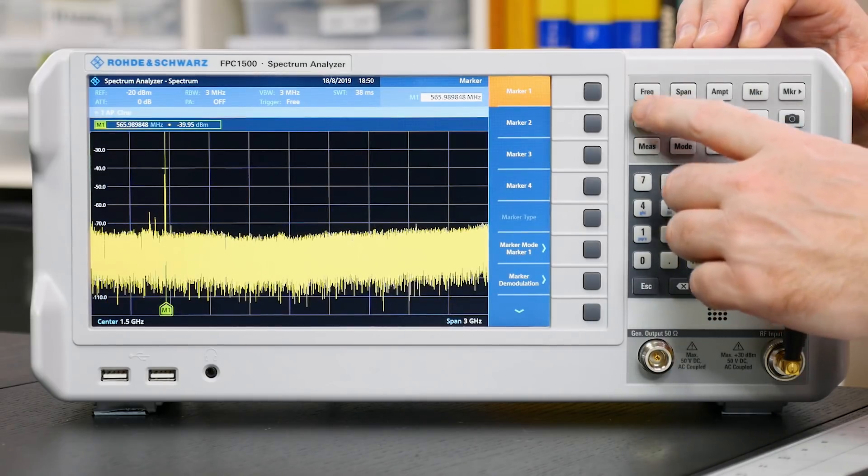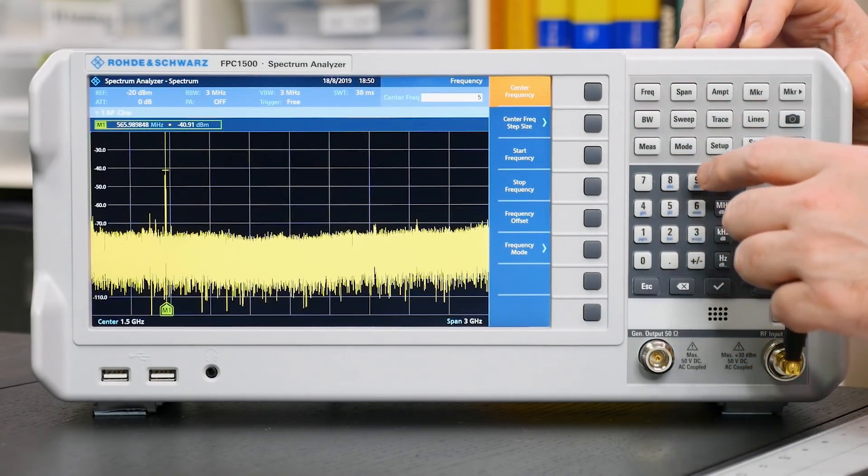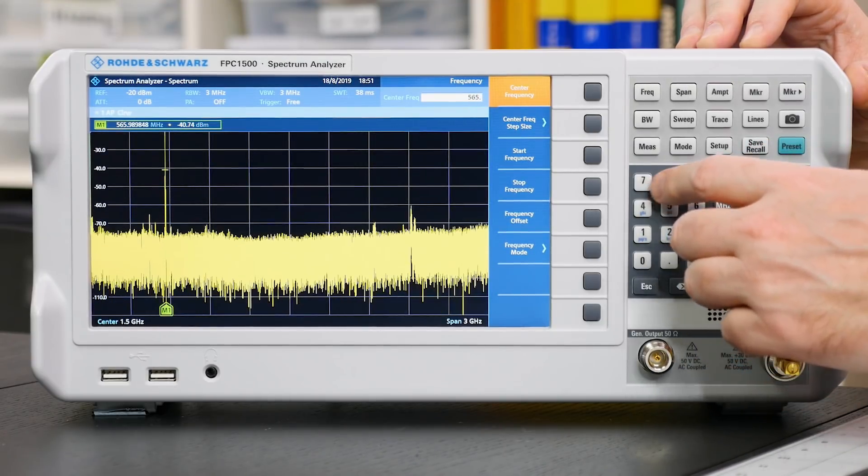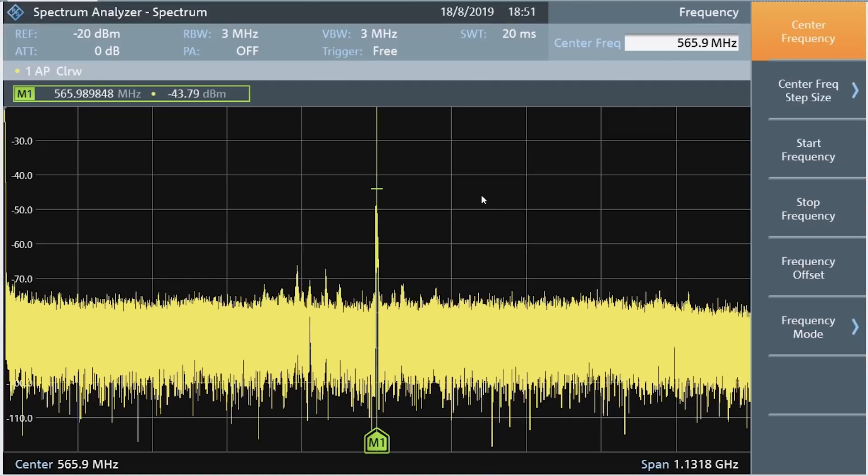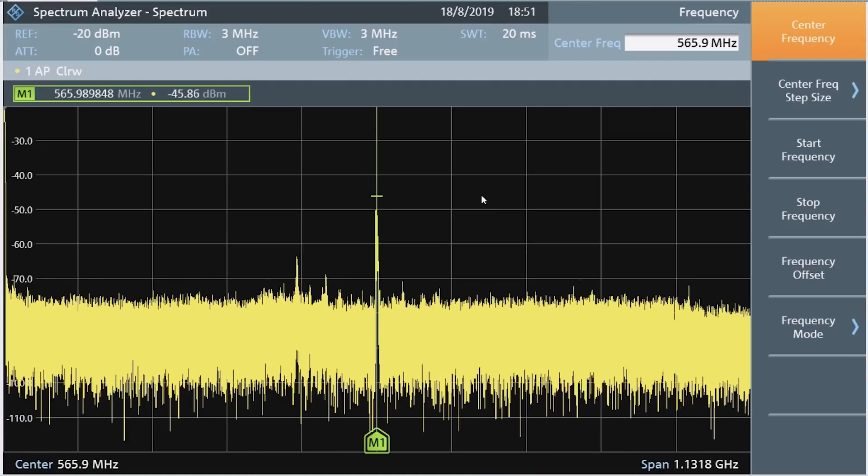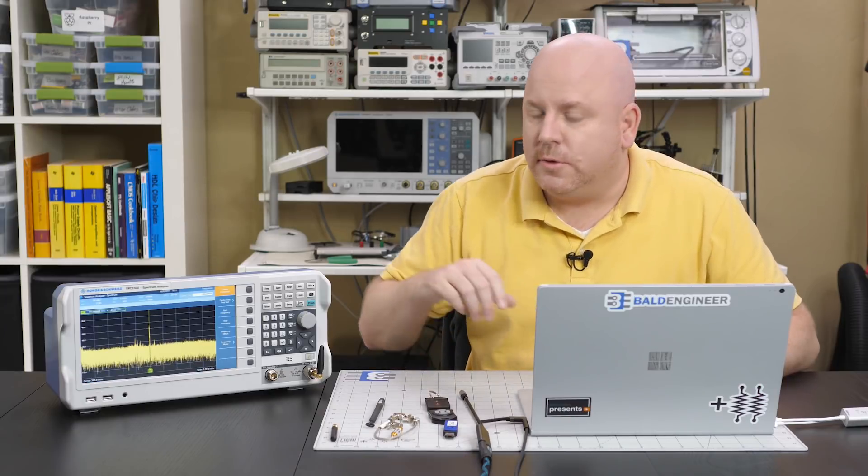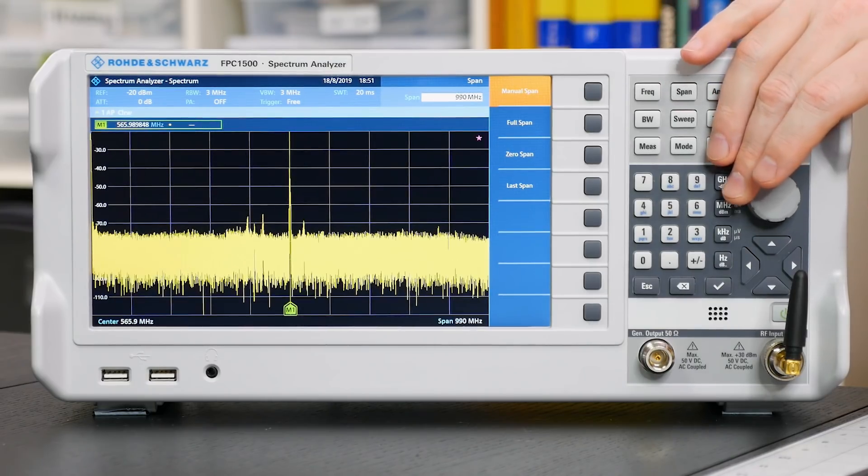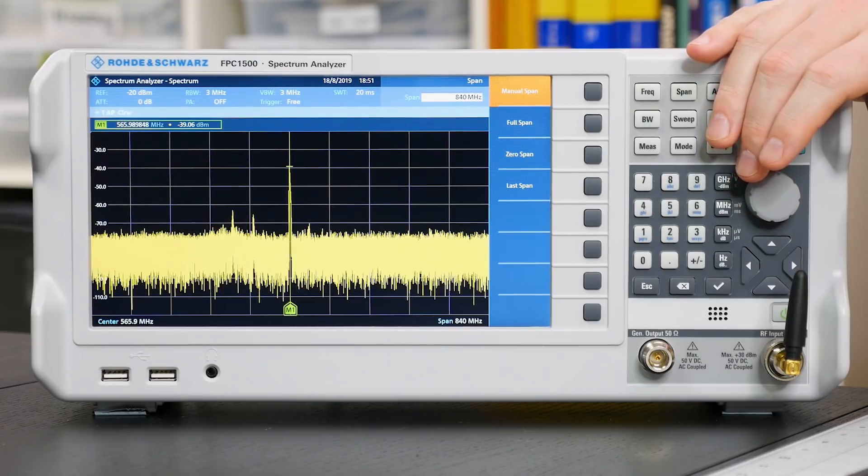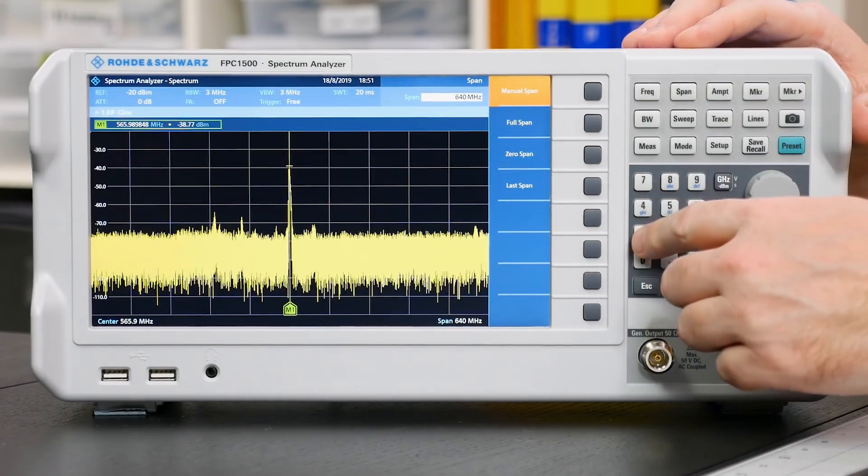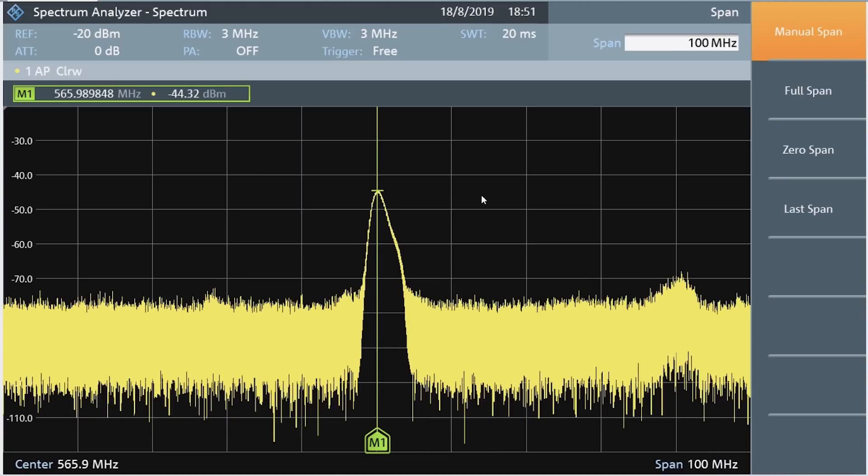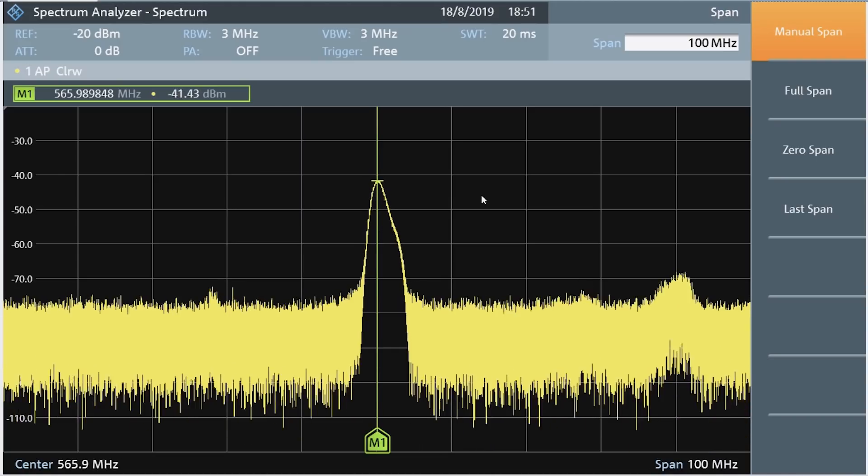Since we are measuring frequency, we should talk about how to change the frequency. Setting the frequency lets you set the center frequency. Now, from the marker, we know that we want a frequency of 565.9 MHz. Notice our spur snapped to the center of the screen, and our span changed a little bit. From here, we will use the span control to zoom in on that peak. And while it is getting bigger, that is kind of slow. So, I am just going to type in 100 MHz. Now, the amplitude looks pretty good, so we are ready to move on.